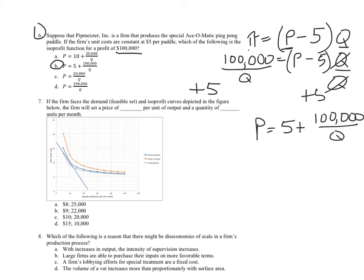All right, number 8 was also one that some teams missed. Let's talk about that since we're here. Which of the following is a reason that there might be diseconomies of scale in a firm's production process? Let's examine these.